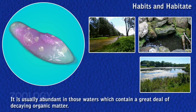It is usually abundant in those waters which contain a great deal of decaying organic matter. It flourishes well in ponds or slowly running streams containing aquatic plants. Paramecia often gather near the surface but are usually seen actively swimming throughout the water in which they live.